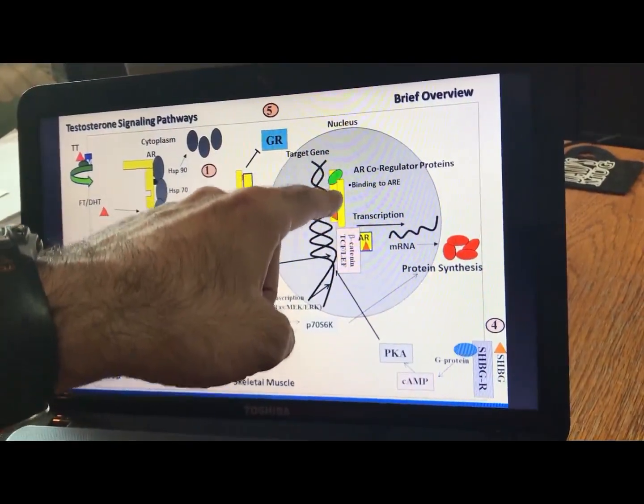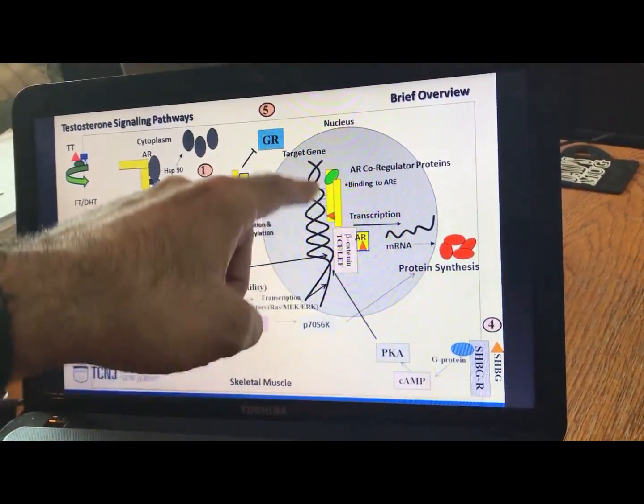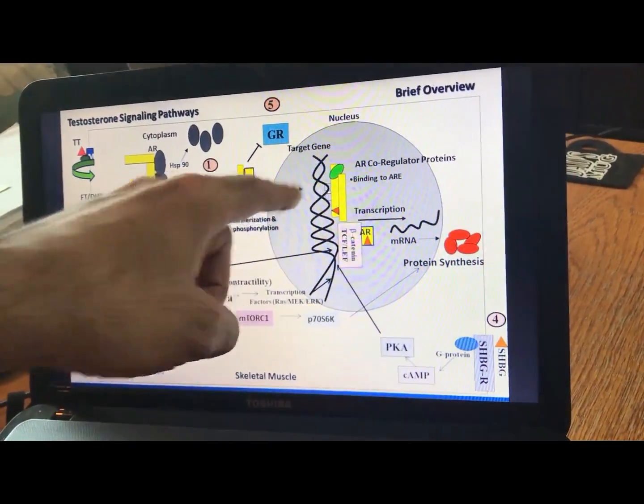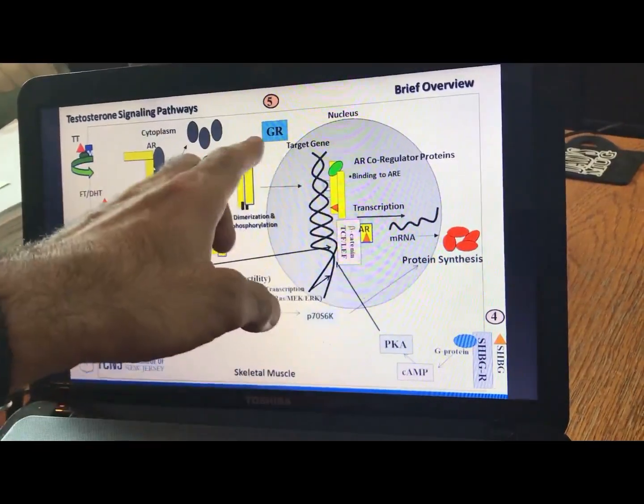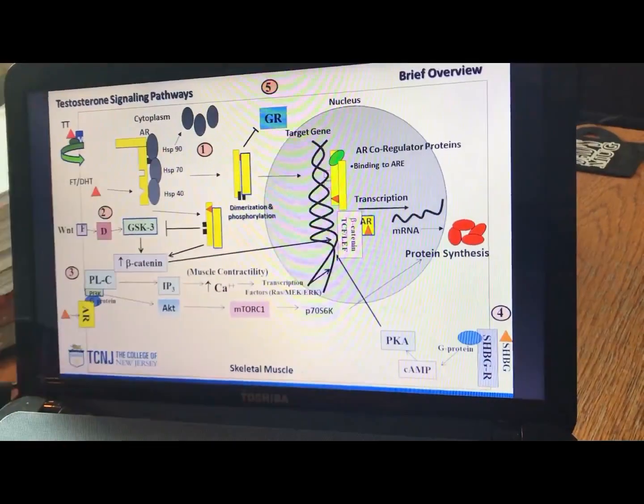See, the interesting thing here, I have the androgen receptor shown. The glucocorticoid receptor, both of these compete for similar binding sites on the gene. So, it's like a tug of war, right? Who's ever going to win out? You want the anabolic to win out. So, when you have more anabolism, less glucocorticoid receptor action means less catabolism.